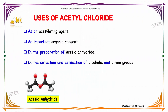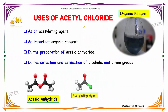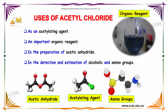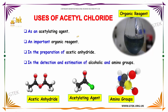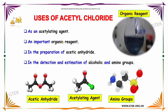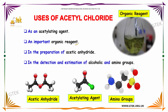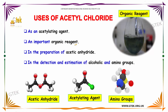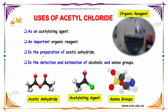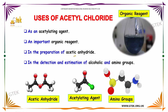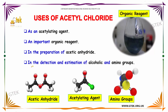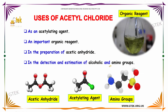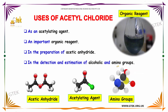Acetyl chloride is used as an acetylating agent and is an important organic reagent. It is used in the preparation of acetic anhydride, and also in the detection and estimation of alcoholic and amino groups.